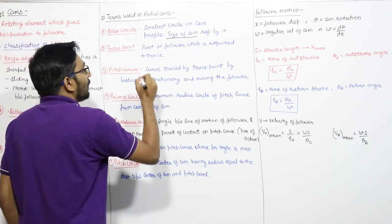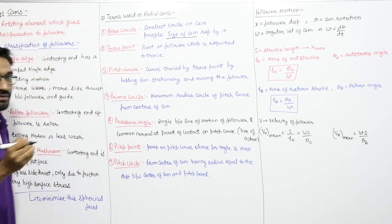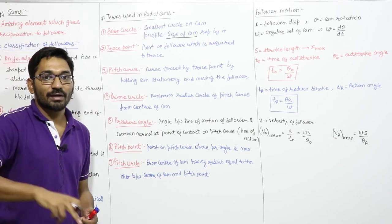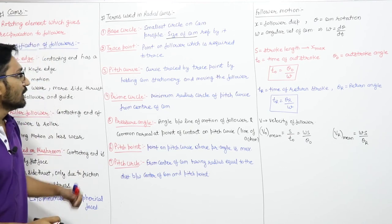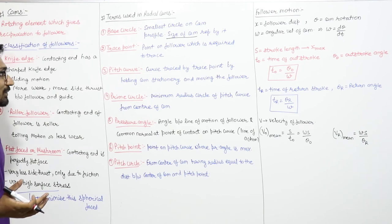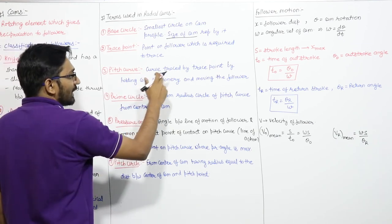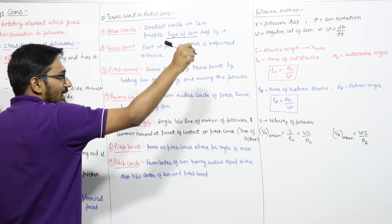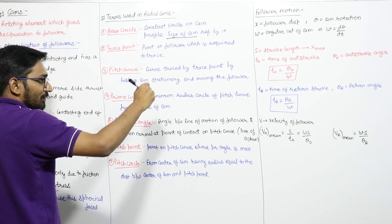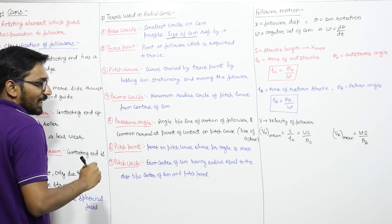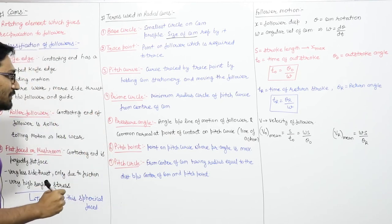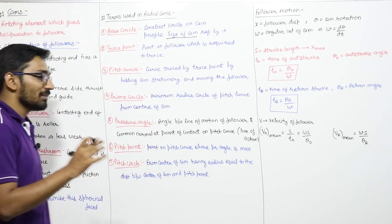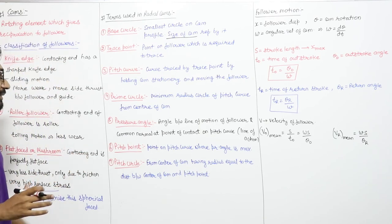Next is the pitch curve — the curve traced by the trace point when the cam is held stationary and the follower is moved along its profile. The curve joining the trace points is the pitch curve. Next is the prime circle — the minimum radius circle of the pitch curve from the center of the cam. Next is the pressure angle — the angle between the line of motion of the follower and the common normal at the point of contact on the pitch curve.